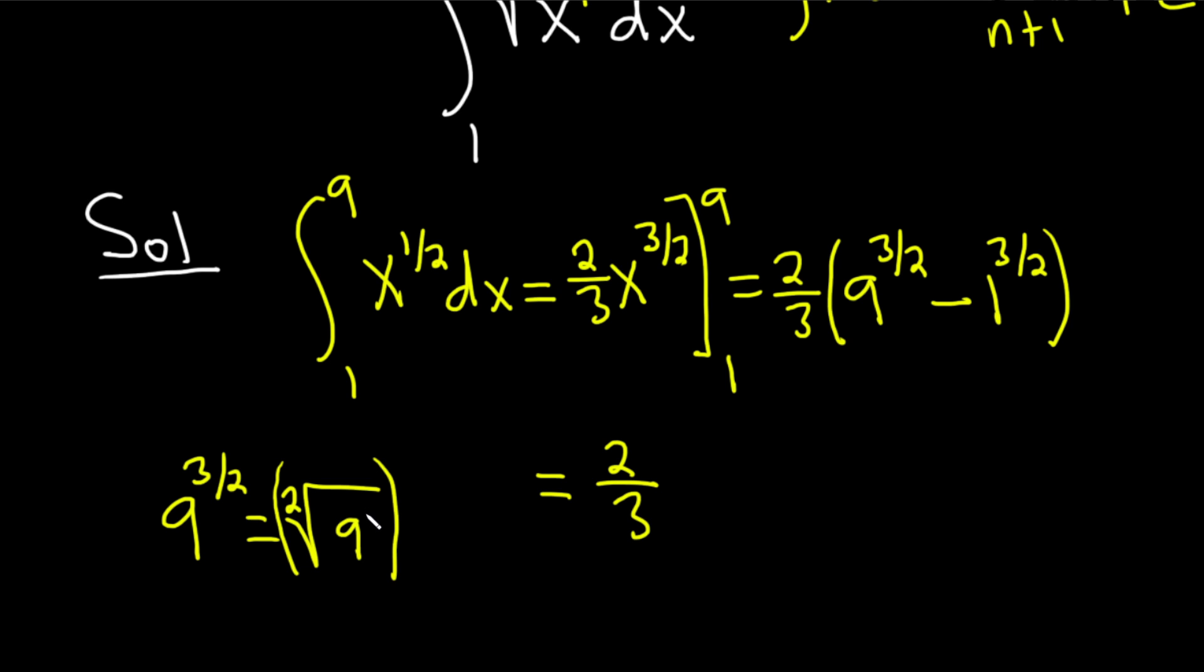You can put it right here where the 9 is or you can put it outside. I'm going to put it outside. The square root of 9 is 3 so you get 3 cubed. So you get 27.